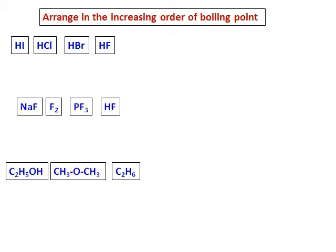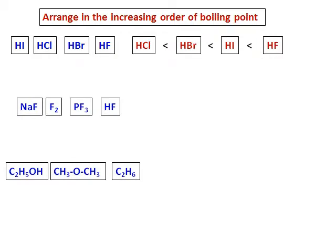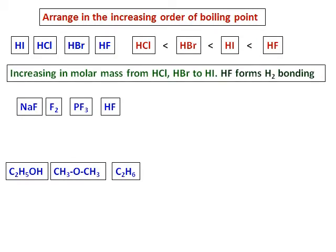Arrange in increasing order of boiling point. The first set given is HI, HCl, HBr, HF. HCl, with the lowest molar mass, will have the lowest boiling point. Then comes HBr, then HI. So far molar mass plays a role, but HF, because it can form hydrogen bonding, will have the highest boiling point. So we put them in increasing order of molar mass from HCl to HI, but HF, because of hydrogen bonding, is at the top of the list.